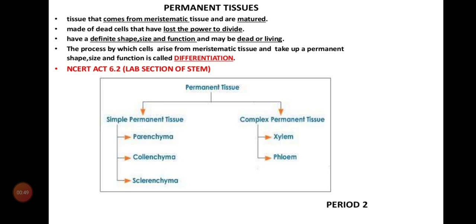Now look at the slide. First point: tissues that come from meristematic tissues and are mature. We are telling that all these tissues are coming from the meristematic tissues only. Even permanent tissues are coming from the meristematic tissues. Meristematic tissues will continuously divide and afterwards they become matured. Those matured tissues of meristematic tissues only we call permanent tissues.